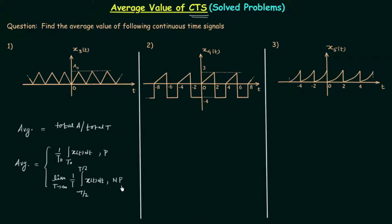We have already seen why we take the limit from -T/2 to T/2, so I will not explain it again as we have very little time to solve the problems. In this lecture we will solve three problems based on average value calculation. This is Part 1 of the solved problems based on the average value of continuous time signals.